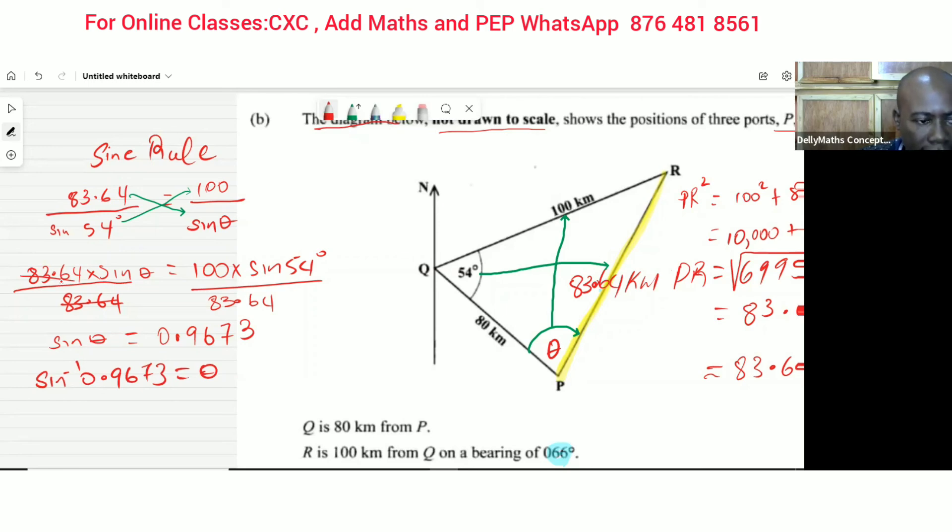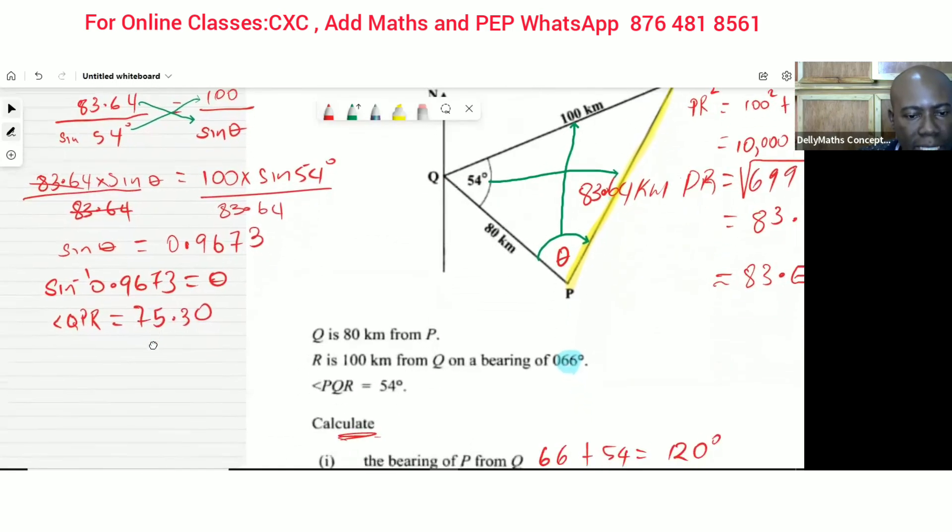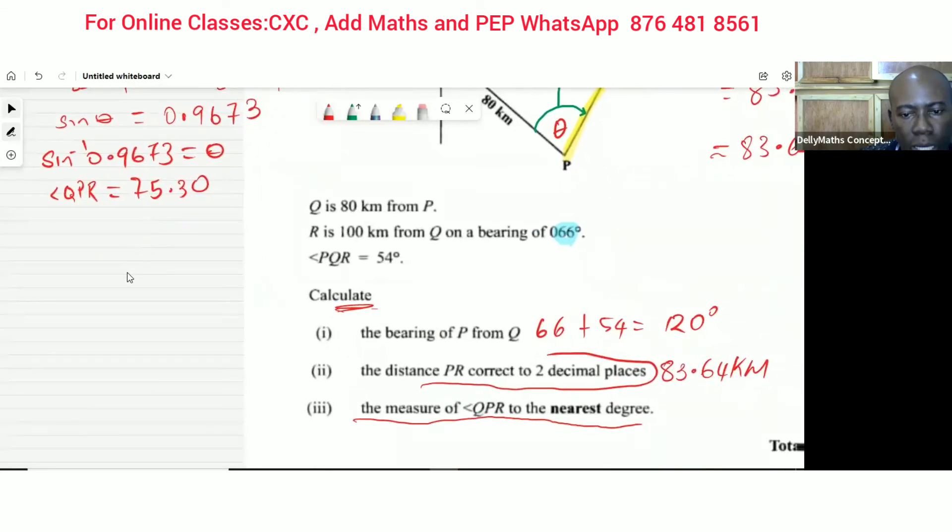And the angle that we get is angle QPR equal to 75.30. But they did ask for a specific angle that has to be given to the nearest degree. To the nearest degree is to the nearest whole number. So in this case the answer is 75 degrees.